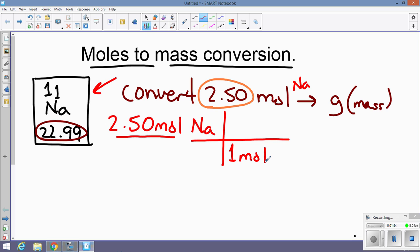And then, on top, what I will have here is the mass of the element. In this case, it's 22.99. And that will be grams of the element.